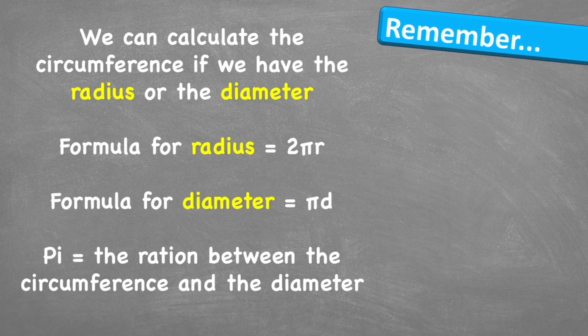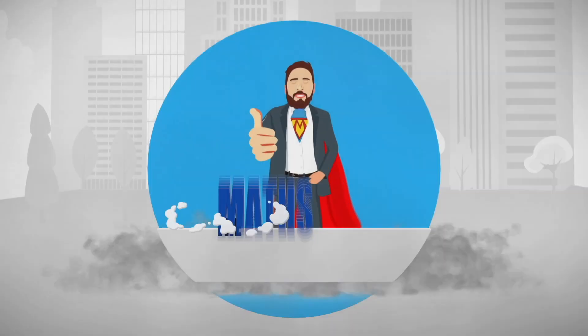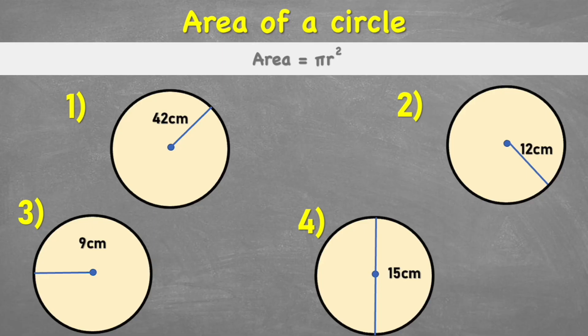To summarize: we can calculate the circumference if we have the radius or the diameter. The formula for the radius is 2πr; the formula for diameter is πd. Pi is the ratio between the circumference and the diameter. Hopefully this video has been helpful — think about subscribing or sharing it with someone who would benefit.